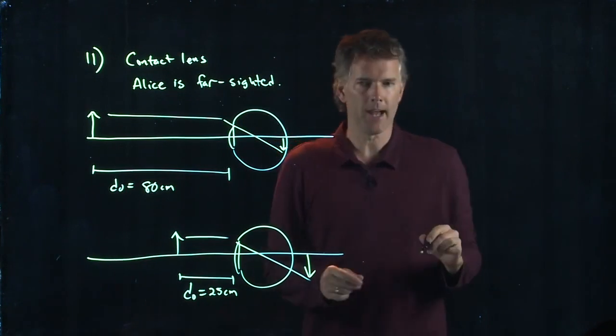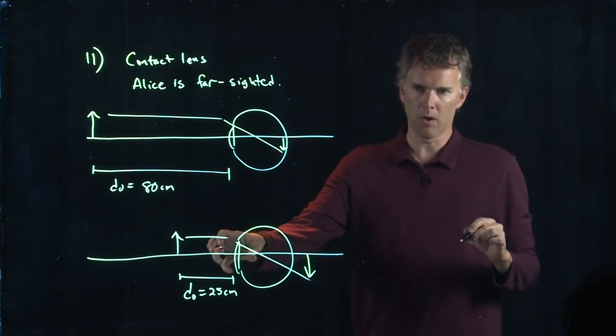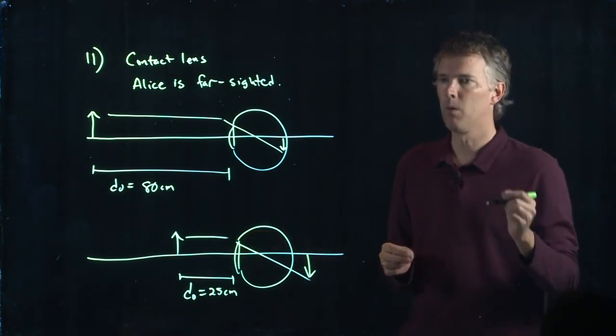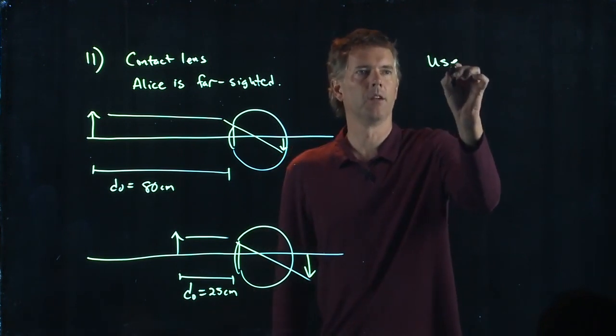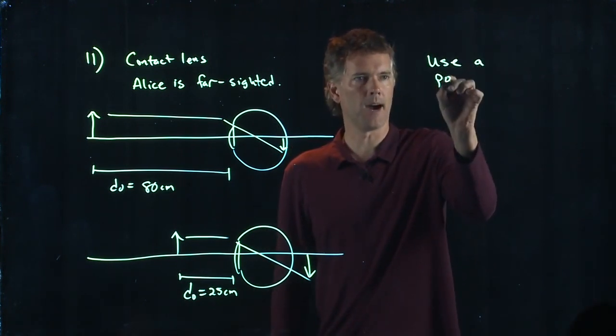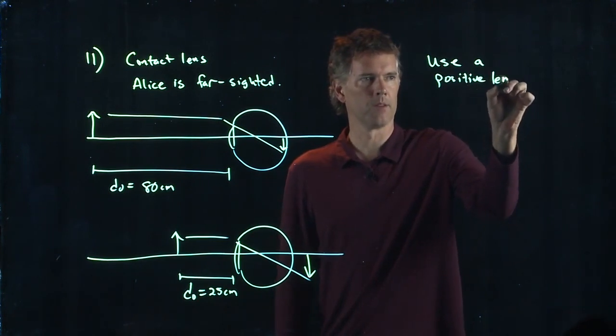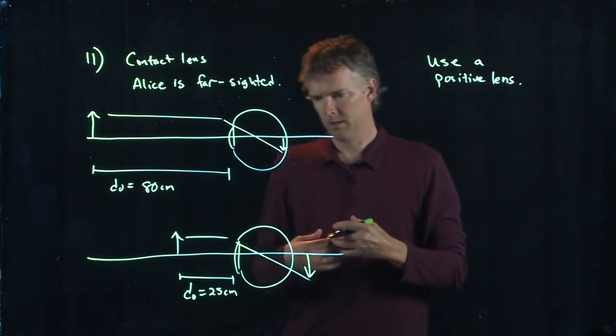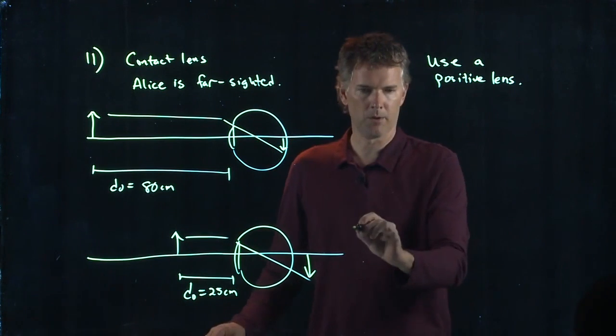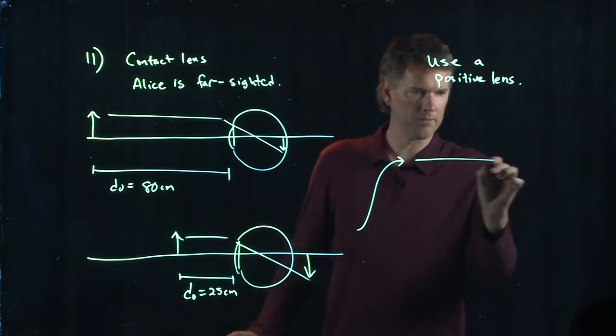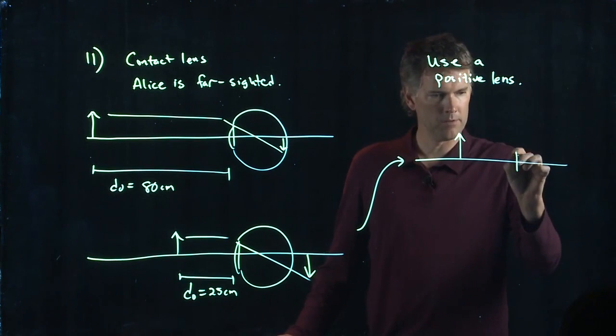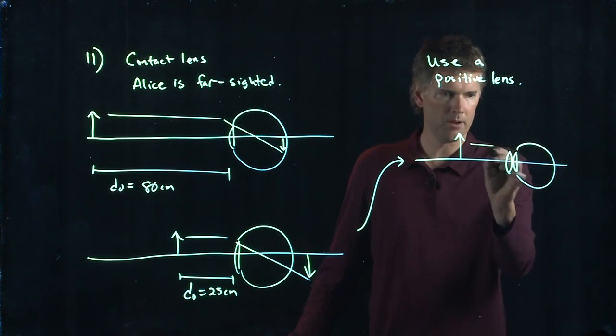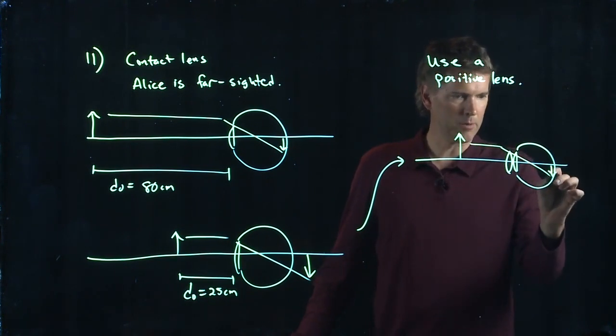So right off the bat, if you're going to fix Alice's eyeballs to read, do you want to use positive lenses or negative lenses? Yeah, you need to use a positive lens in this case. Reading glasses are positive lenses. So we're going to take this picture now and we're going to add a positive lens. So here's her eyeball. I'm going to put a contact lens right on her eyeball and now the image is formed on the retina.